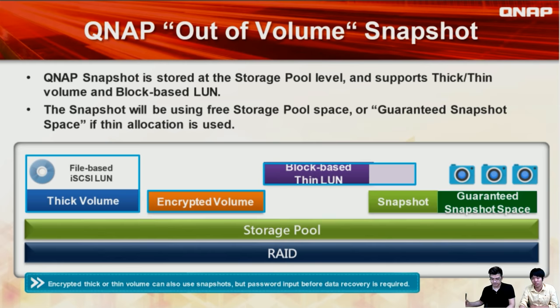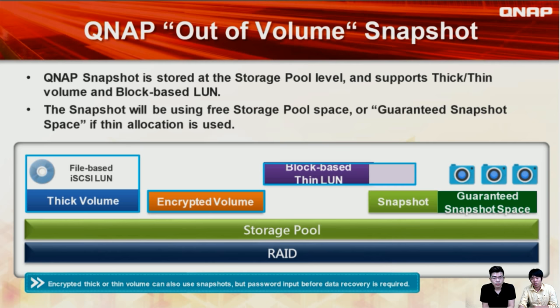Today we'll go through all the features and basic functions about snapshot. First, I want to show you our architecture chart: our snapshot supports all storage configurations on the storage pool, which includes thin volume, thick volume, and iSCSI LUN. We also provide a guaranteed snapshot space. Because our snapshot is stored on the storage pool, all volumes and LUNs can share a single snapshot space. If you use thin or thick volume, you can also reserve guaranteed space, ensuring you always have space to store snapshots.